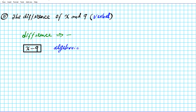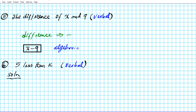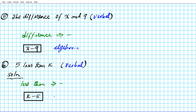Question six: five less than k. This is the verbal format. The operation 'less than' — remember 'more than' suggested addition — so 'less than' indicates subtraction. Five less than k is reversed: you do not write it in the verbal order. The base amount you're starting with is k, and then you subtract five from it. So k − 5 is the algebraic form.